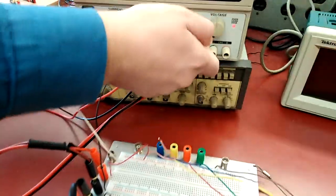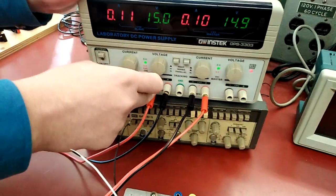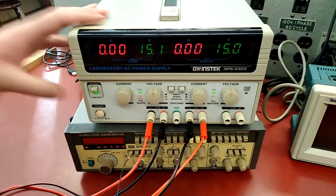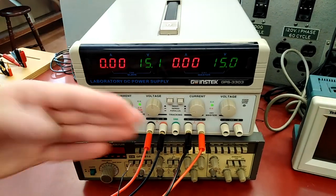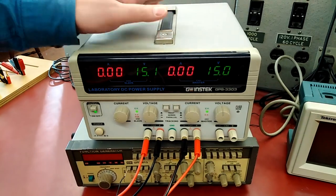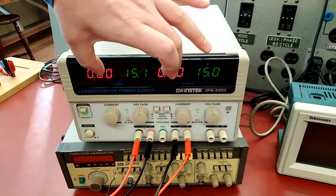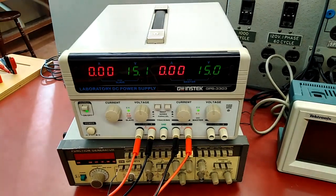When you turn on, the currents drop to zero because right now I'm not drawing any current. But when you have a circuit, the number you see here is the current you are drawing.